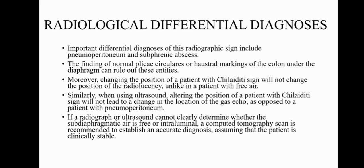The radiological differential diagnosis of Chilaiditi sign and Chilaiditi syndrome includes pneumoperitoneum and subphrenic abscess. The finding of normal plicae circulares or haustra markings of the colon under the diaphragm can rule out these entities. Moreover, changing the position of the patient with Chilaiditi sign will not change the position of the radiolucency, unlike that in a patient with free air in the peritoneal cavity. Similarly, when using ultrasound, altering the position of the patient does not lead to a change in the location of the gas echo, as opposed to a patient with pneumoperitoneum.